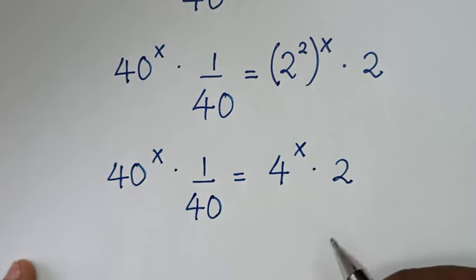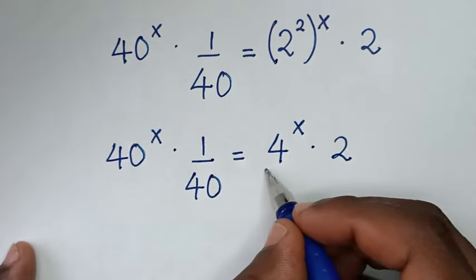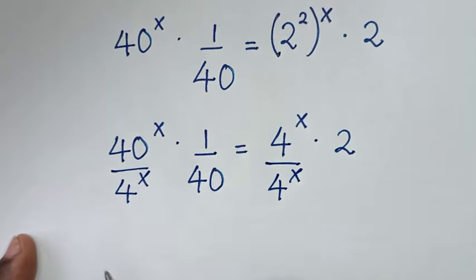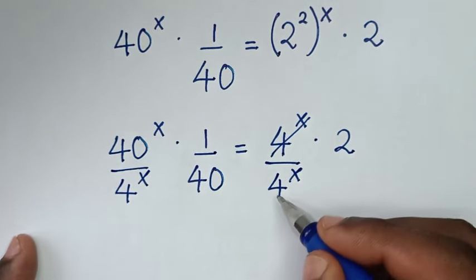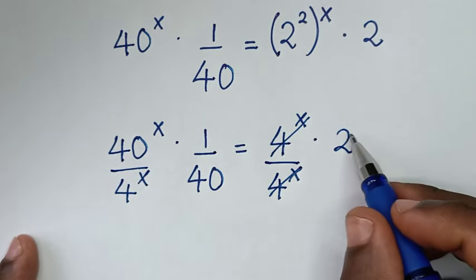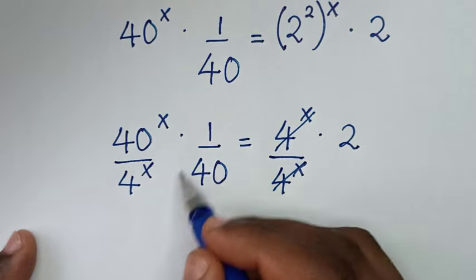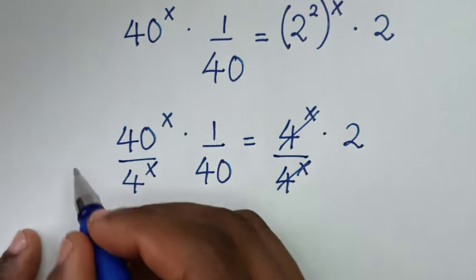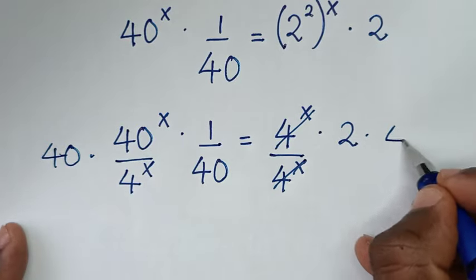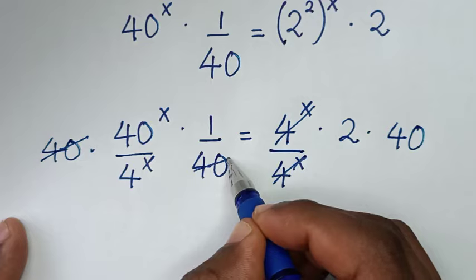Then in the next step, we will place the like terms with the power of x together, so we divide both sides by 4 power of x. So 4 power of x divided by 4 power of x is 1, giving 1 times 2. Then we place constant terms together, taking 40 to the other side by multiplying both sides by 40, cancelling the 40.